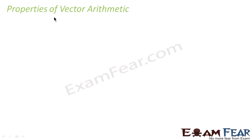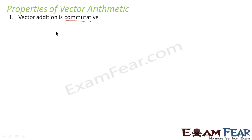Now we look at properties of vector addition. The very first property is vector addition is commutative. As we already know all these properties in case of numbers — commutative means, for example, 1 plus 2 is equal to 2 plus 1. So vector addition is commutative means if we have two vectors a and b, then a plus b is equal to b plus a.